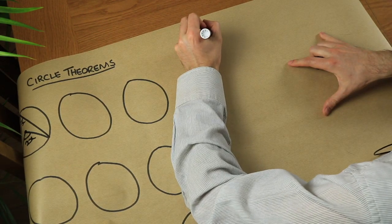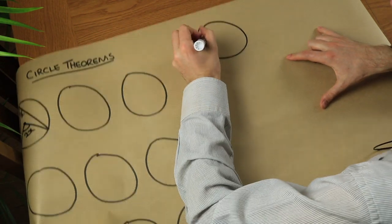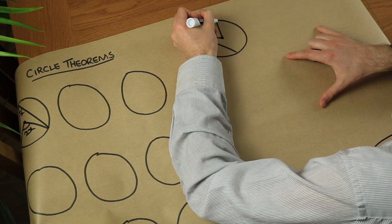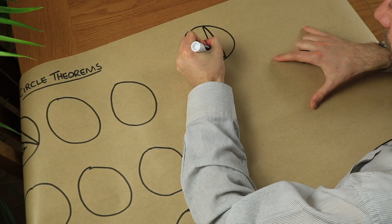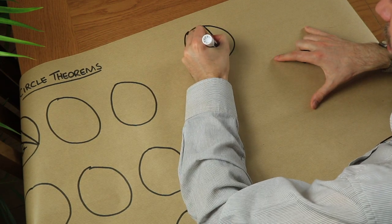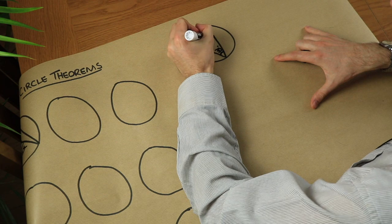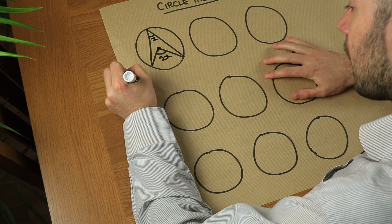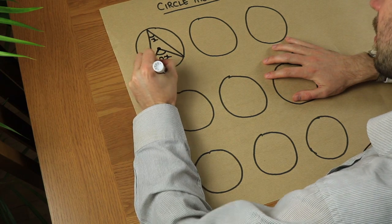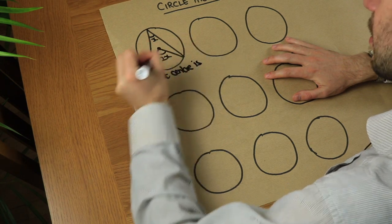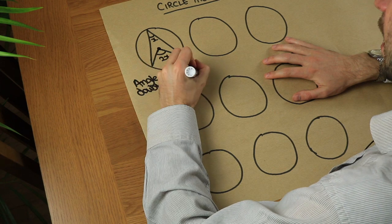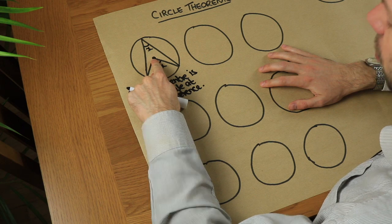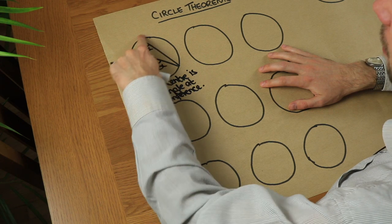Just to give an example: if we have a circle with an angle at the centre and an angle at the circumference, and this angle at the circumference was 30 degrees, then the angle at the centre would be double, which is 60 degrees. So the circle theorem is: the angle at the centre of the circle is double the angle at the circumference. Always check that one angle is at the centre and the other is at the circumference.